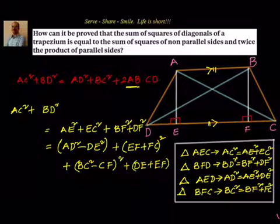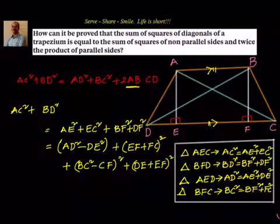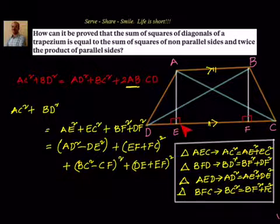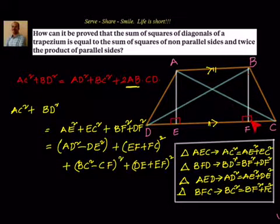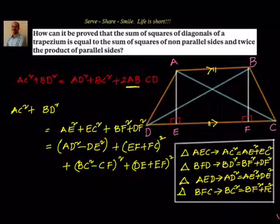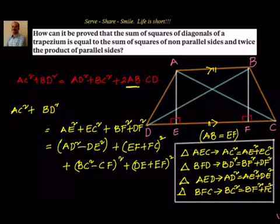Let's look at this step carefully — within two steps we will get the answer. We have AC² + BD², where AC² = AE² + EC² and BD² = BF² + FD². We wrote AE² = AD² − DE², EC² = (EF + FC)², BF² = BC² − CF², and DF² = (DE + EF)². We will now leverage the property that AB = EF and expand to move forward.